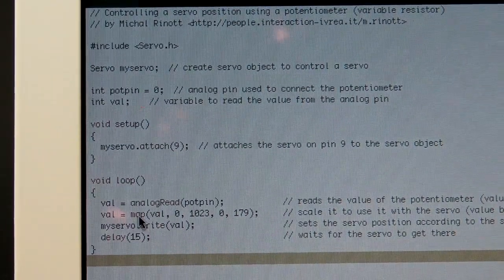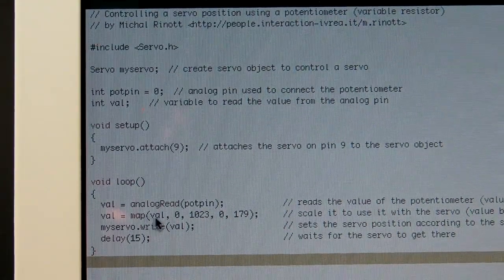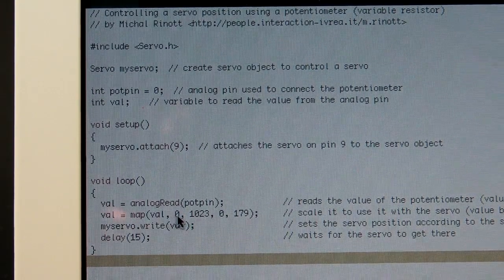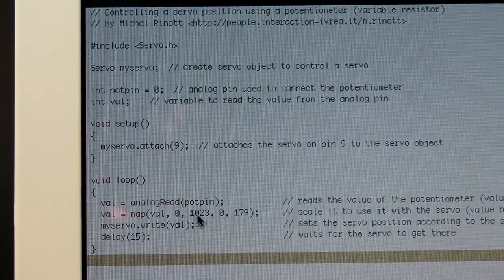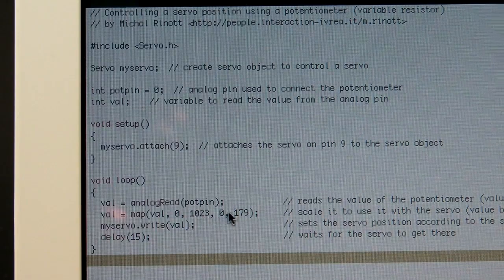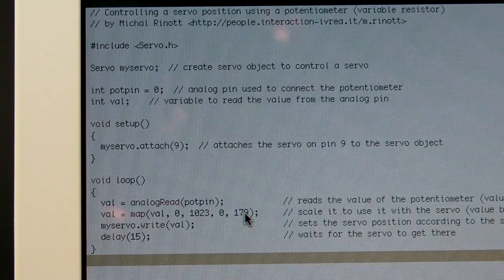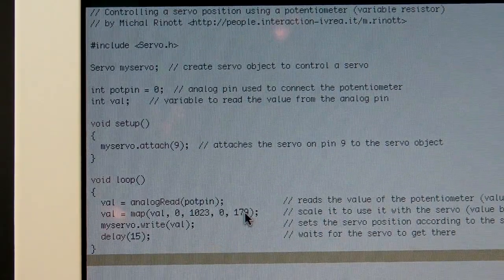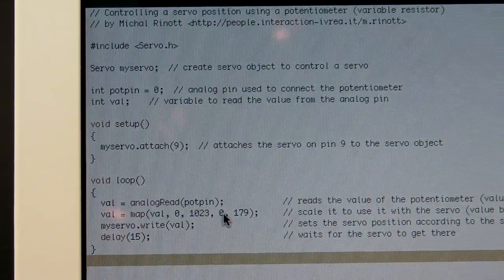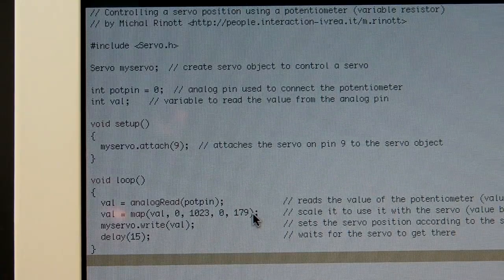And map is really cool. What map does is you can take a series of numbers and convert them to another series of numbers, or a range of numbers. There's probably a better way to say that. What it says is that map value, which we know already is the analog reading, and the minimum analog reading is zero and the maximum is 1023, and we want to map that to the range between zero and 179. And the reason being is that is the numbers that we use for controlling a servo. And that's, zero is, you know, all the way, I believe, left, and 179 would be all the way right. Servos vary slightly in how much range they have. Generally it's about 180 or more degrees.